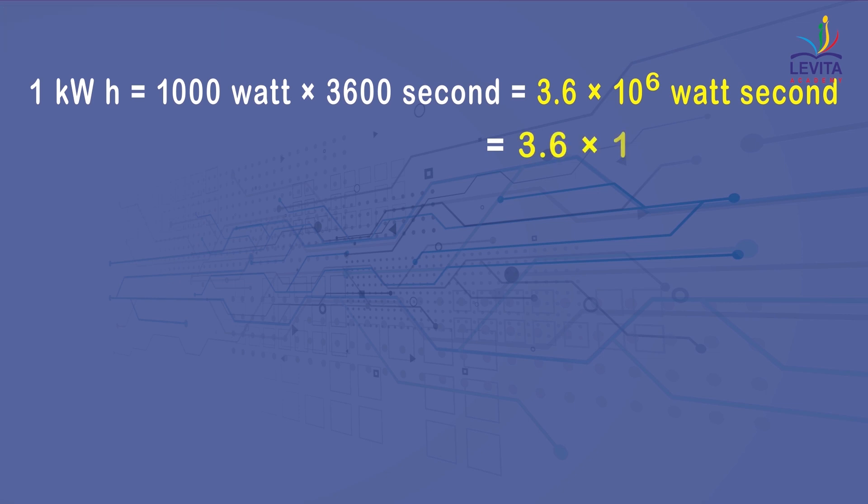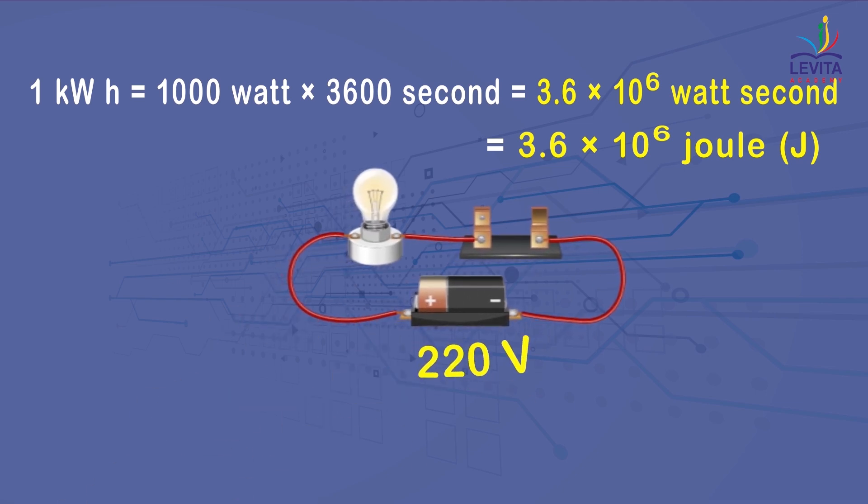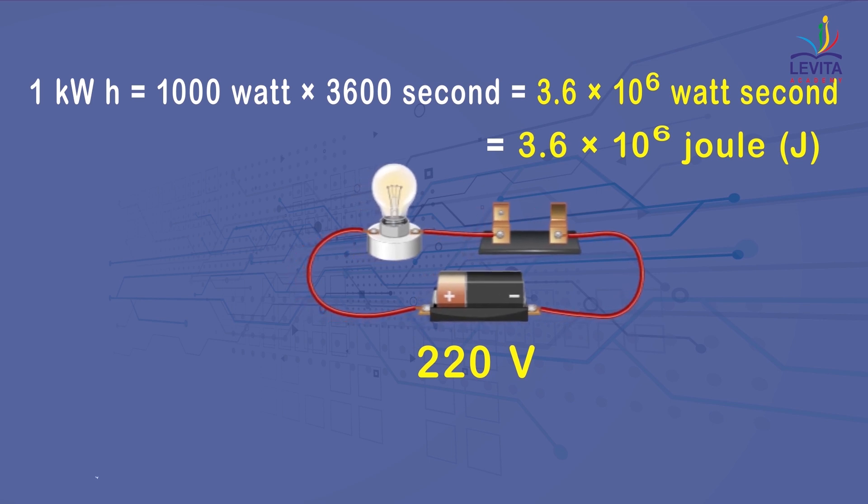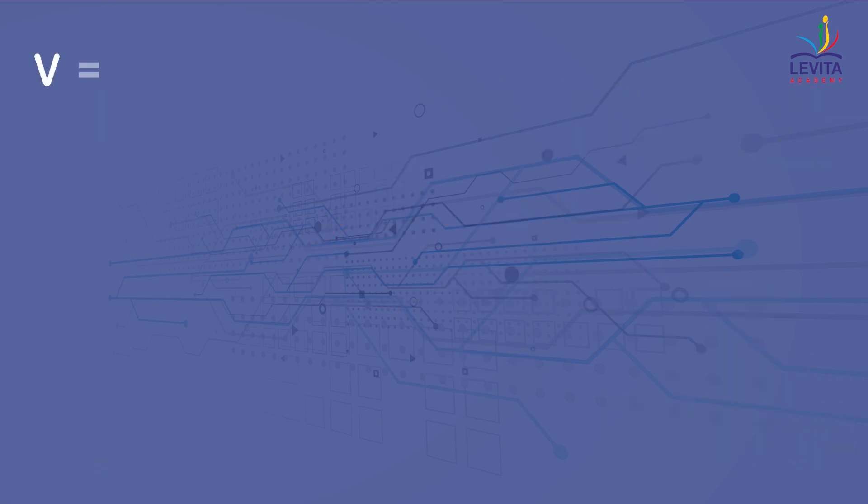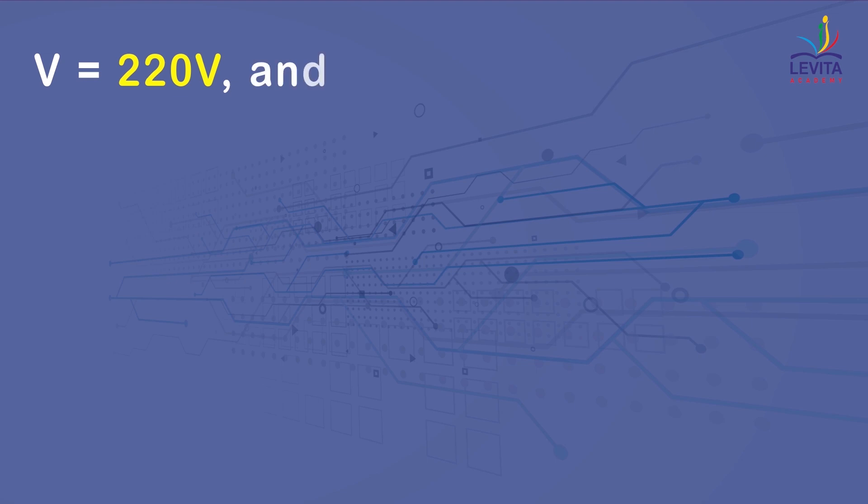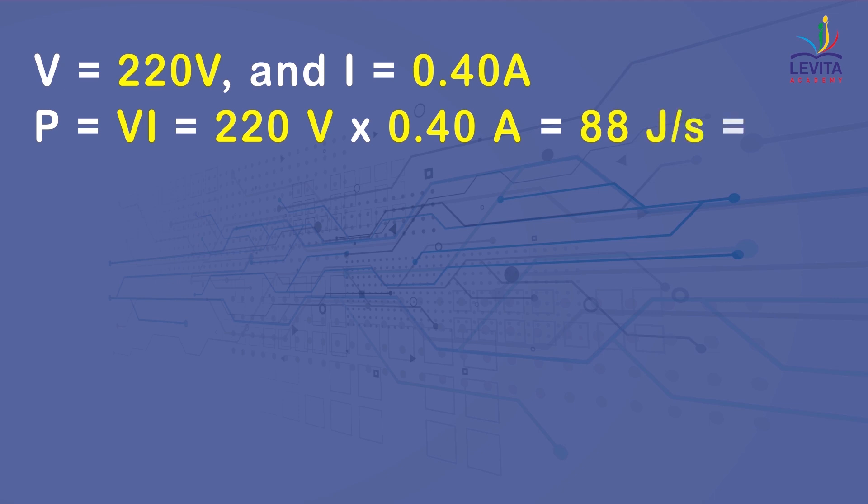For example, suppose an electric bulb is connected to a 220 volt generator. The current is 0.40 ampere and we have to determine the power of the bulb. So, here V = 220V and I = 0.40A. We know that P = VI that is equal to 220V × 0.40A. That is equal to 88 joule per second. That gives us 88 watt.